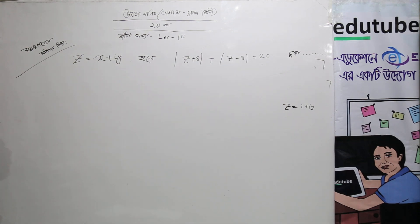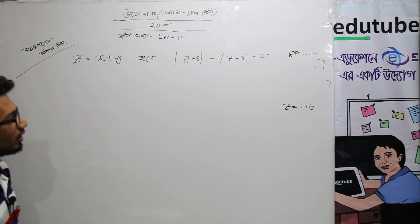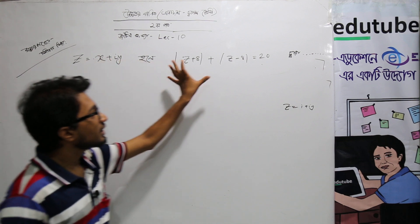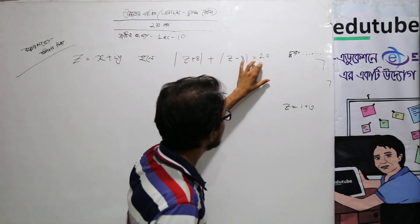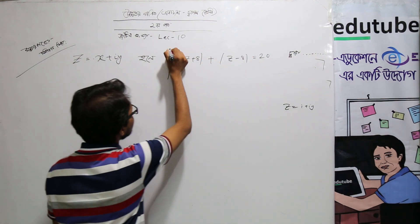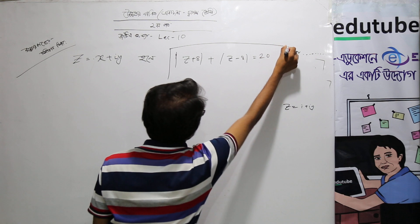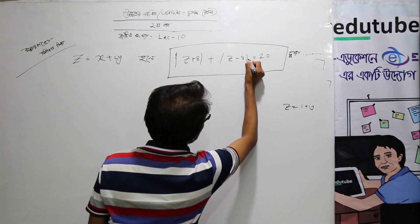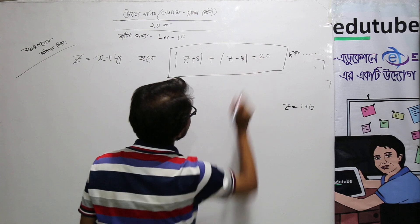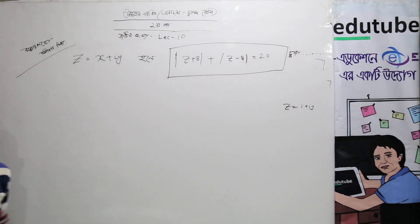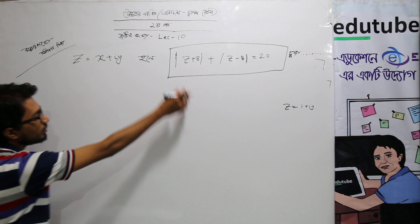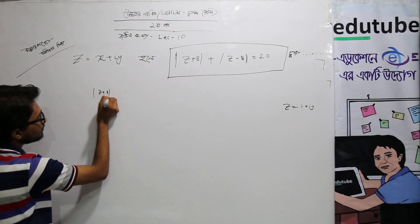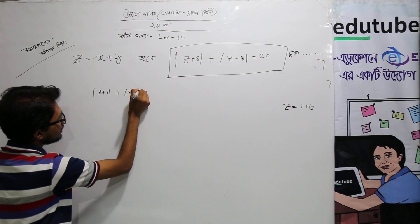We will use the formula. We'll use the formula with z = x + iy, and set: |z + 8| + |z - 8| equals 20.